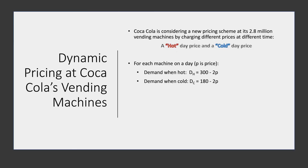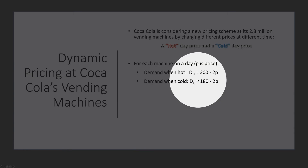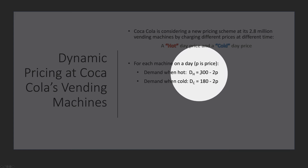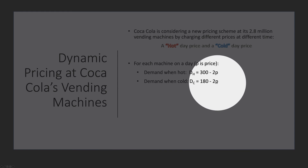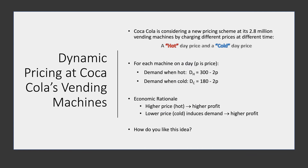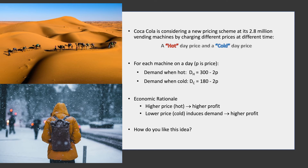Here is an example of a dynamic pricing scheme that Coca-Cola actually considered. Coca-Cola considered a new pricing scheme at its 2.8 million vending machines by charging different prices at different times: a hot day price and a cold day price. The demands on hot days and cold days differ — on a hot day, demand is 300 minus 2 times price; on a cold day, demand is 180 minus 2 times price. Assuming half the time it's hot and half the time it's cold, the economic rationale is that on a hot day a higher price increases profit margin, and on a cold day a lower price induces demand. How do you like this idea?